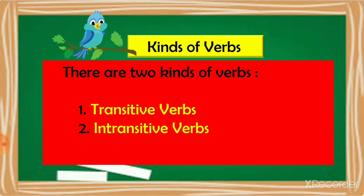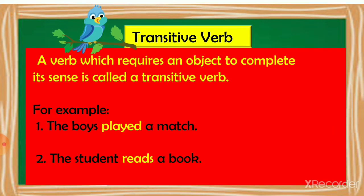Kinds of verbs. There are two kinds of verbs: transitive verbs and intransitive verbs. Read these sentences: the boys played a match; the student reads a book. In these two sentences, the highlighted words played and reads are verbs which have objects — a match and a book respectively. When a verb needs an object to complete its sense, it is a transitive verb. So a transitive verb is a verb which always needs an object to complete its action.